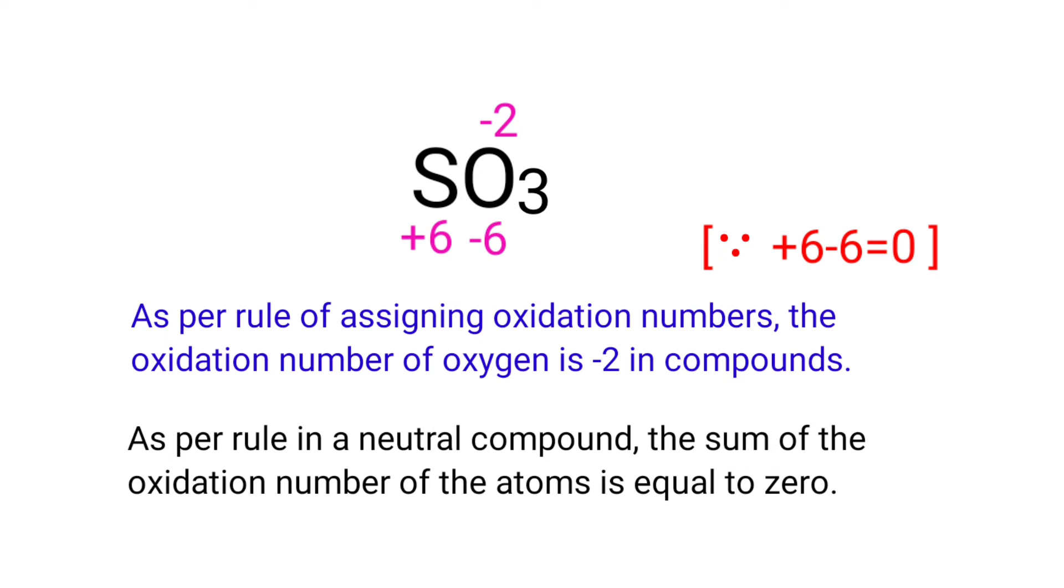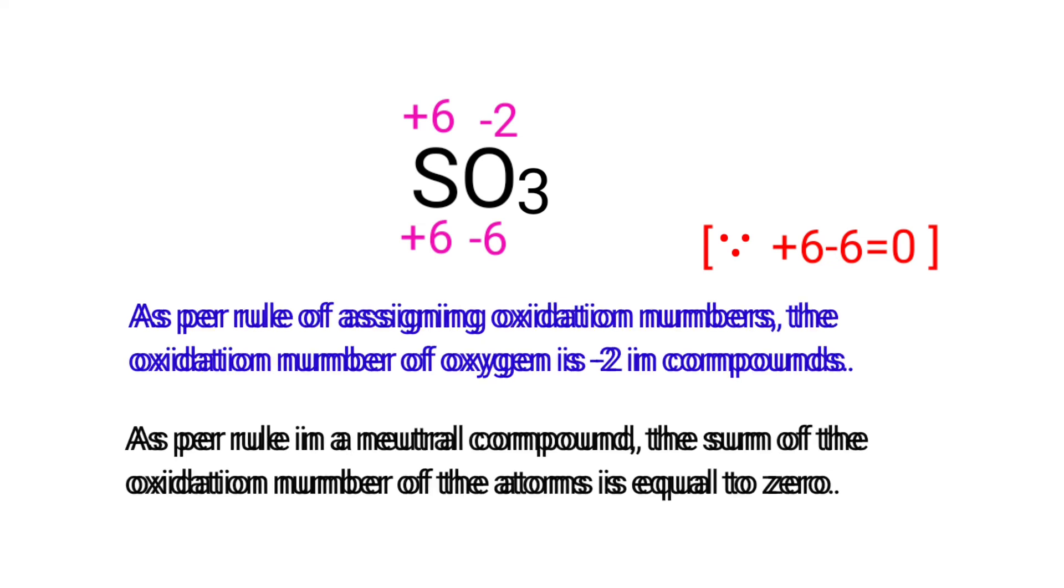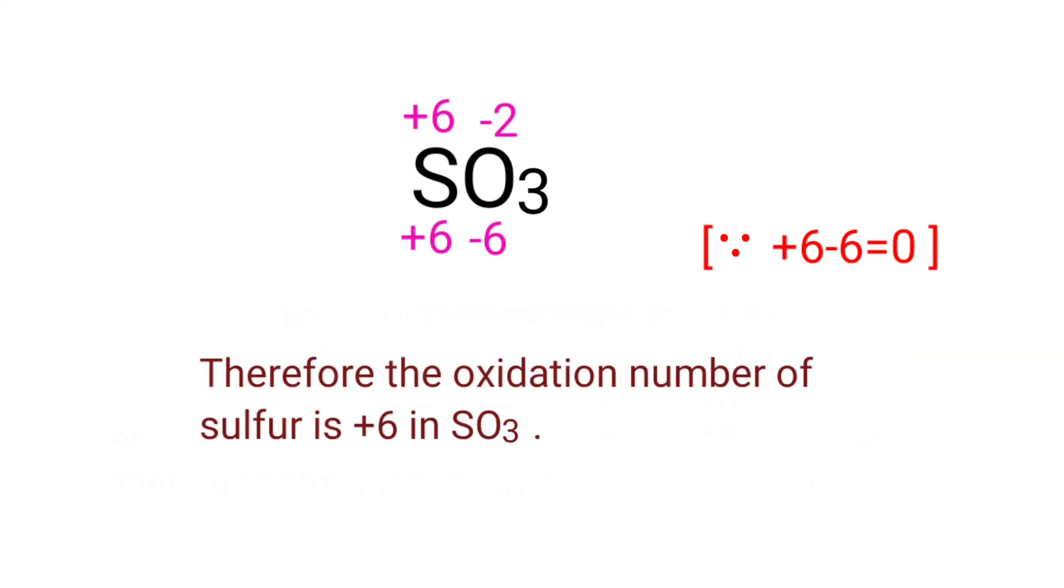So we can write the oxidation number of sulfur is +6. Therefore, the oxidation number of sulfur is +6 in sulfur trioxide.